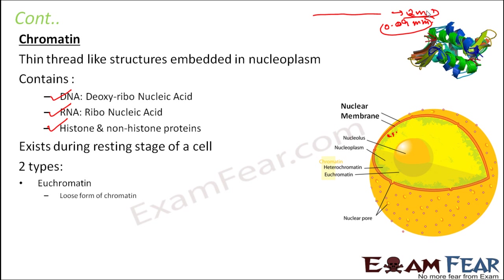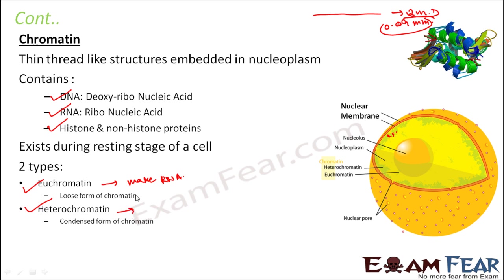There are two types of chromatin: euchromatin and heterochromatin. Euchromatin is the loose form of chromatin — it contains genes that make RNA and is called 'true chromatin.' In heterochromatin, the genes are not active; it is the condensed form of chromatin and contains extra copies of genes called junk genes. Euchromatin participates directly in making RNA, whereas heterochromatin cannot make RNA on its own but can regulate the process of protein synthesis.